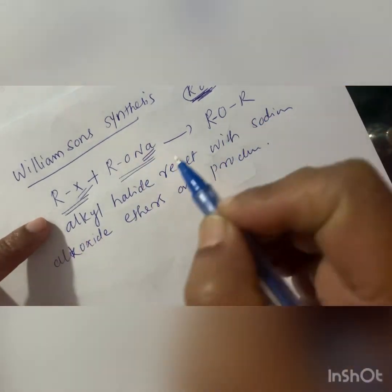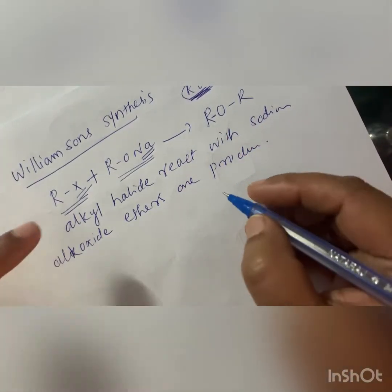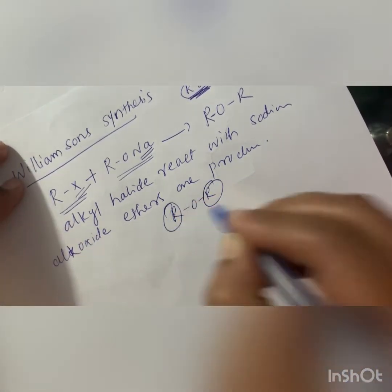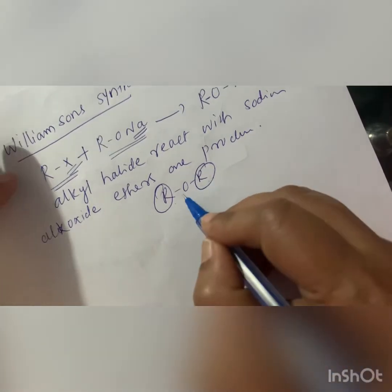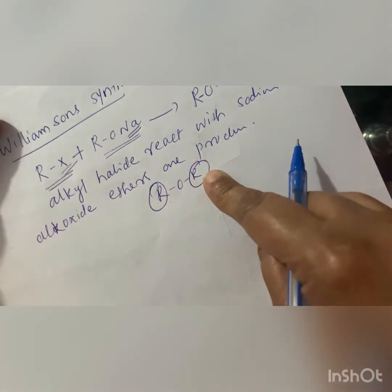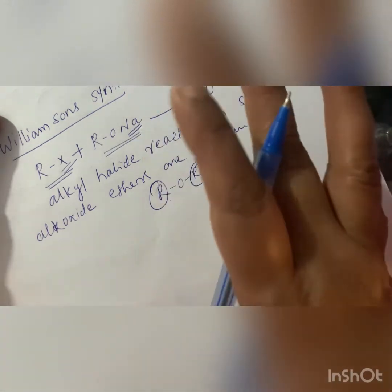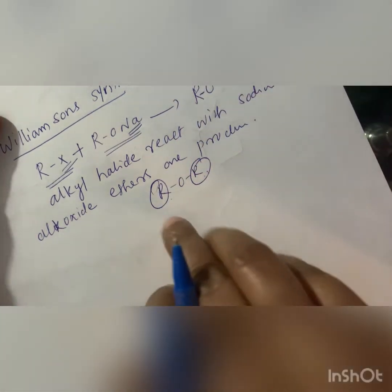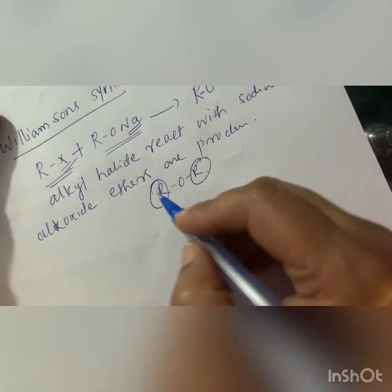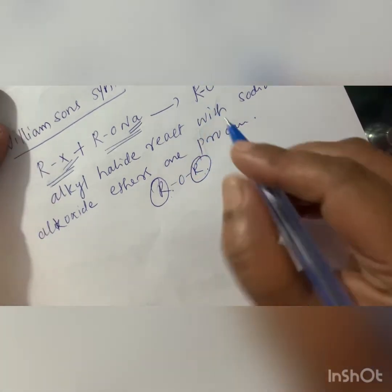In Williamson's synthesis, we can only use primary alkyl halide. In the ROR product, one R group must be primary. If both R groups are tertiary, we cannot prepare that ether by Williamson's synthesis. The primary R group must come from the alkyl halide RX side.